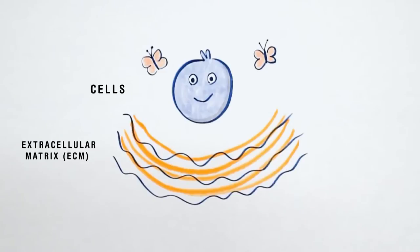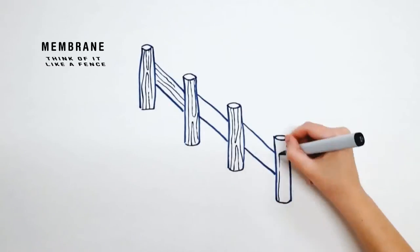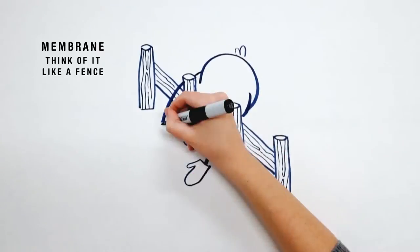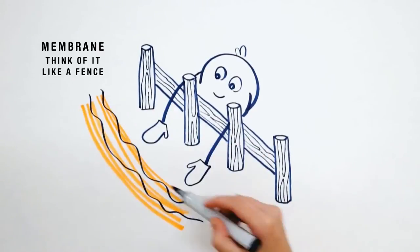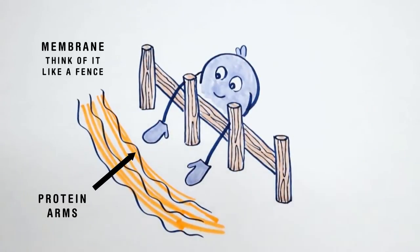What keeps the cells separated from the matrix is a membrane. Membranes give our organ structure and also prevent cells from floating all over our bodies. The membrane acts like a fence for cells. Cells can stick little protein arms through the fence to try to see and feel what's going on outside, but there isn't a gate so they can't pass through.